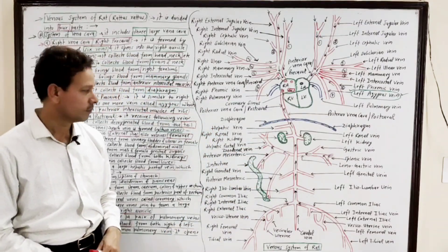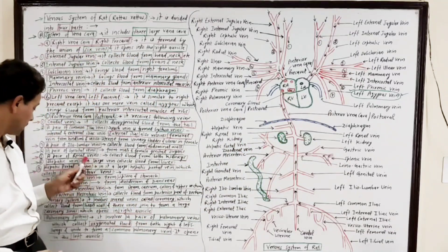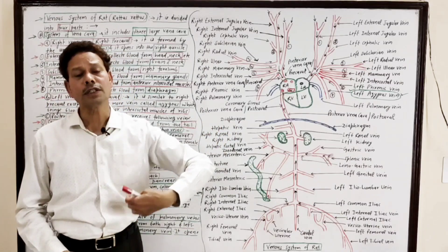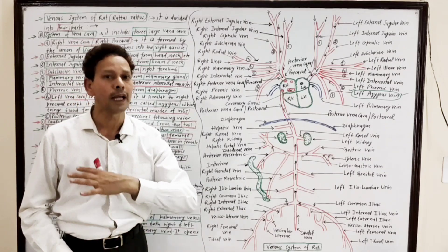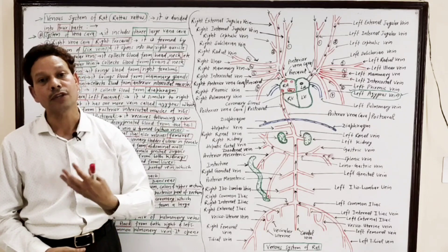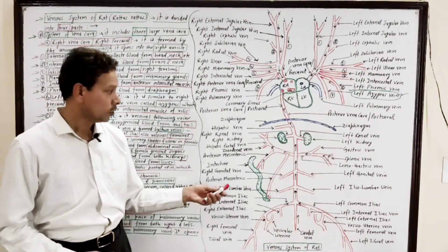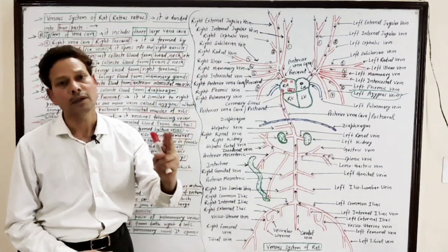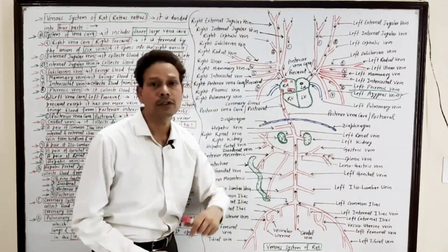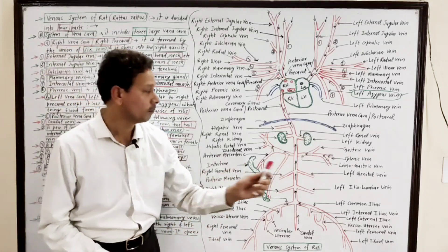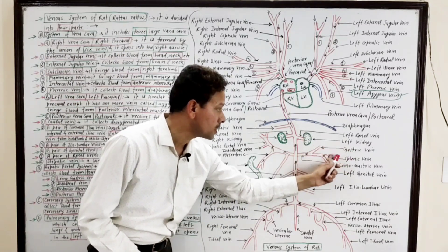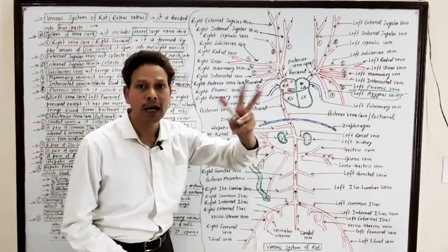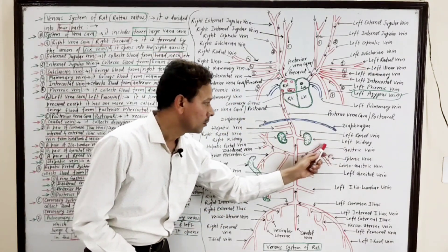The second system is the hepatic portal system. This system brings deoxygenated blood from all over the alimentary canal — from the digestive tract, like the stomach, intestine, and rectum. It receives blood via the gastric vein from the stomach, and the splenic vein from the spleen. Together the gastric and splenic veins collectively constitute the lienogastric vein, which brings blood from the stomach and spleen.